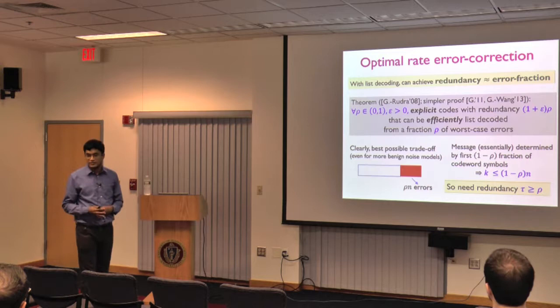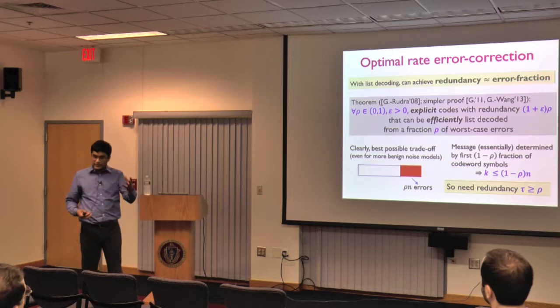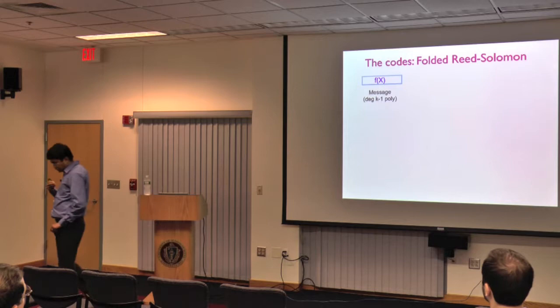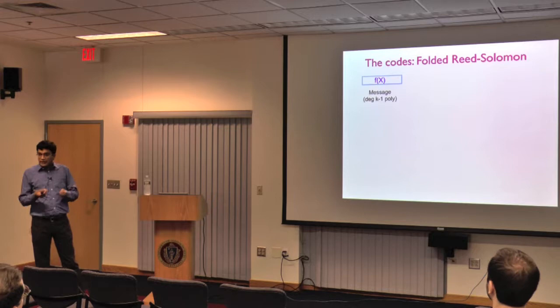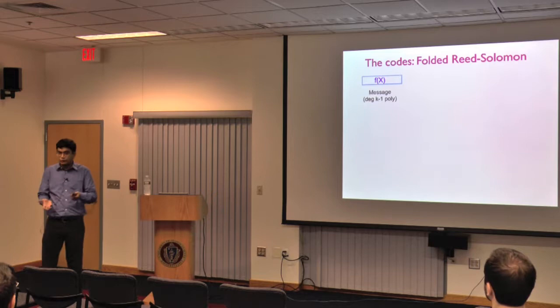The list size and complexity do grow with epsilon — you pay a price for getting closer to optimality. But importantly, the result doesn't give a contrived code: it takes the well-known Reed-Solomon code and makes a small change, called folding, which is better for practical deployment than introducing a completely new code.